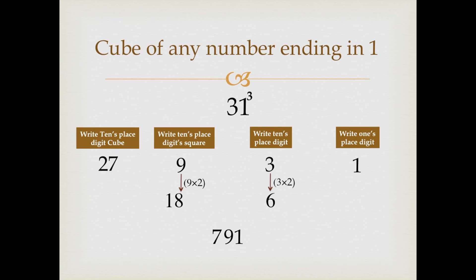So, 27 plus 2 makes 29. Write down 29. Our answer is 29791.